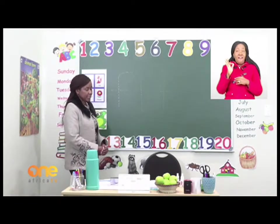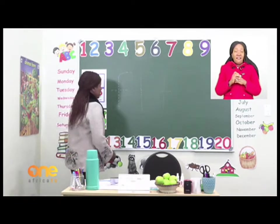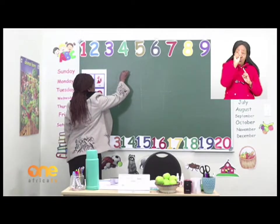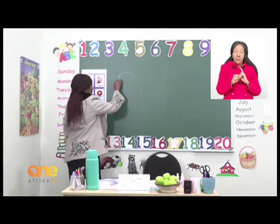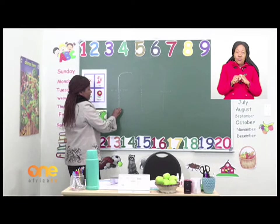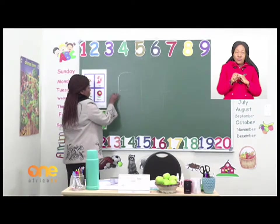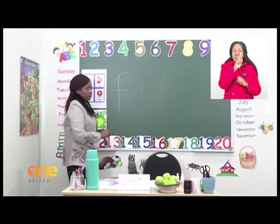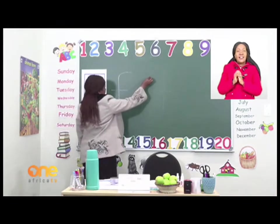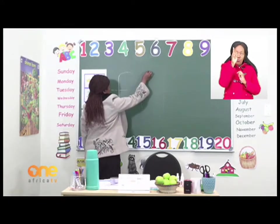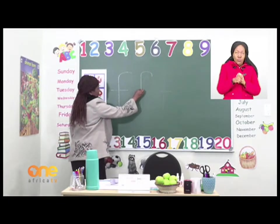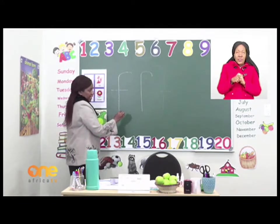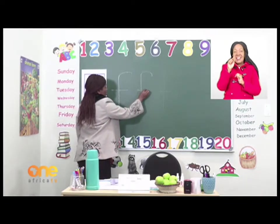You curve up a little bit, and we go all the way down. Letter F — spotty — and we put a line in the middle. Let's do it once more: curve up a little bit, and we go all the way down. Letter F — spotty — and put a line in the middle.